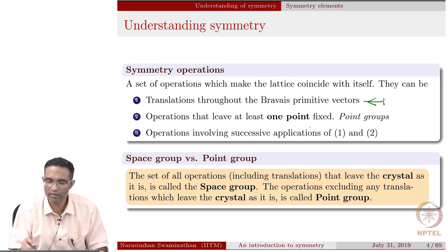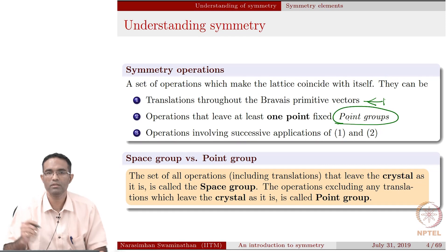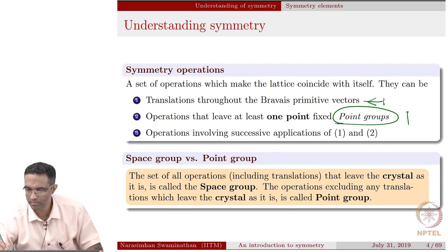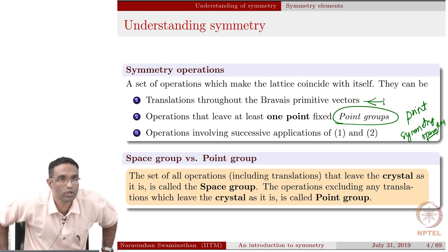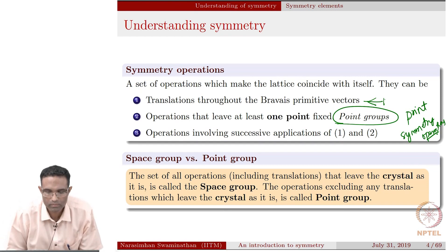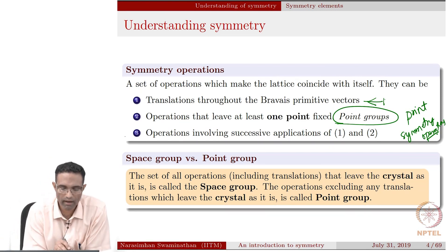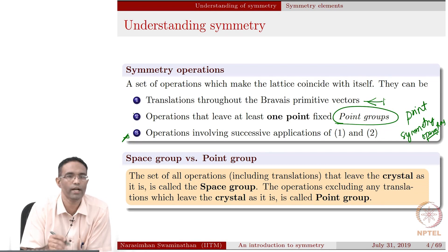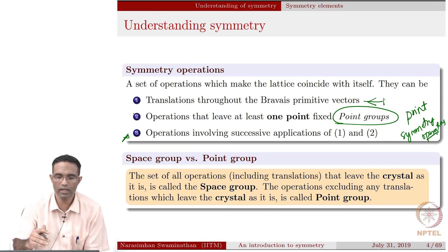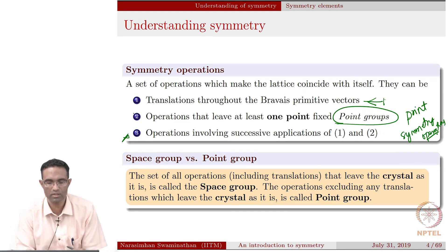In addition to that, you have something called point symmetry operators, which leave at least one point fixed when you are actually performing this operation. And then you also have operations which might involve successive applications of both 1 and 2. These are different kinds of symmetry operations that are possible, which will essentially make the lattice coincide with itself.